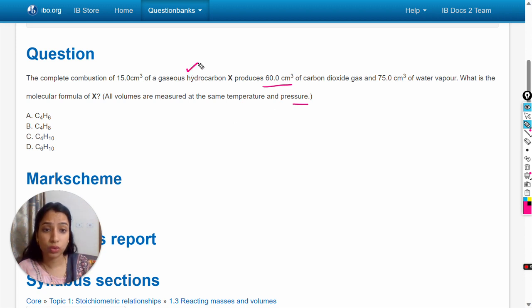This question shows the combustion reaction of the hydrocarbon. So how we will write the reaction? Combustion reaction: X reacts with oxygen, produces carbon dioxide and water vapor. This is the general reaction.